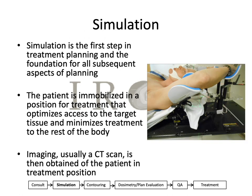The next step for our patients is simulation, which is really the beginning of treatment planning and the foundation for all subsequent aspects of planning. This is a very important step because how your patients are at simulation is how you want them to be for the entire course of their treatment. In SIM, the patient is immobilized in a position for treatment that both optimizes access to the target tissue and minimizes treatment to the rest of the body, particularly those organs in close proximity. Imaging is typically taken — usually a CT scan, but many centers use MR scans or PET CT. The patient is then marked often with tattoos and many pictures are taken for documentation stored in their chart.